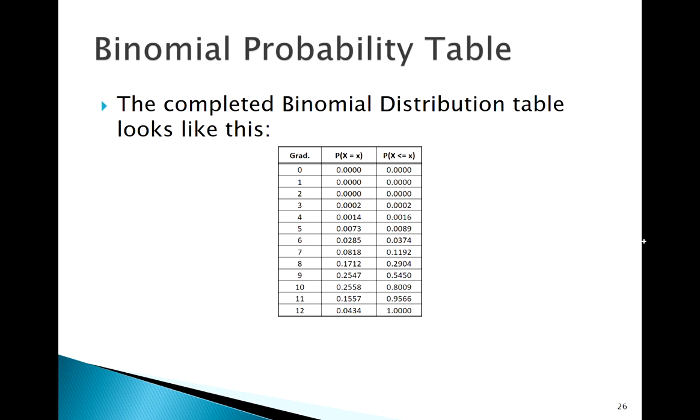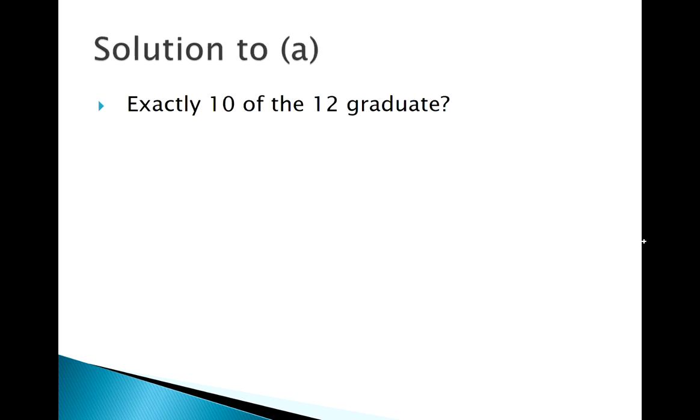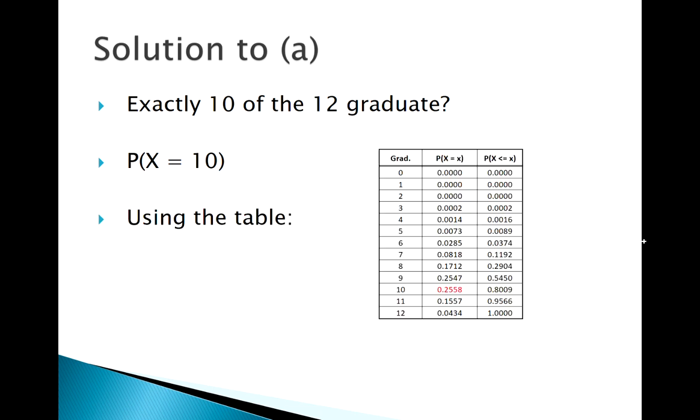But the nice thing is now I can use this table and just go in and grab probabilities. Okay, so what's the probability 10 out of the 12 graduate? So X equal to 10. Using our table, just grab that PMF value at 10. Super simple.